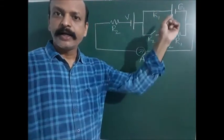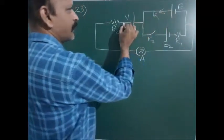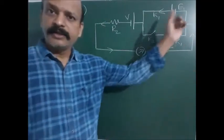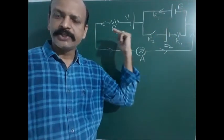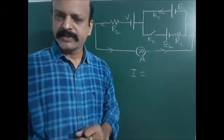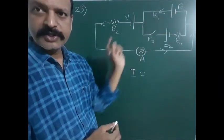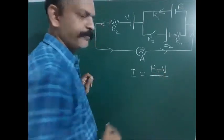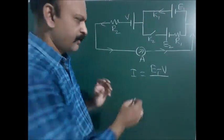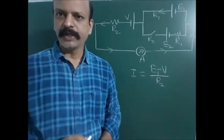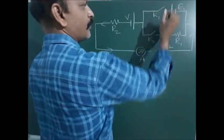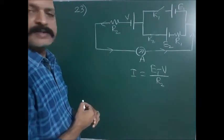If k1 switch is closed, current passes in this direction. Assuming e1 is greater than V, the current direction will be along the e1 direction. The current equals total EMF by total resistance. E1 and V are opposing each other, so net EMF is e1 minus V. In the entire circuit, only r2 is acting, so current = (e1 - V) / r2 when k1 is closed.